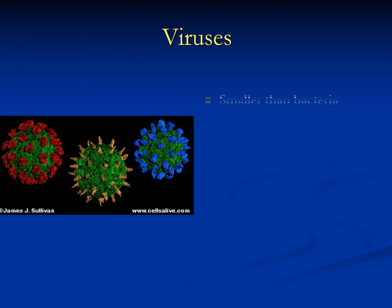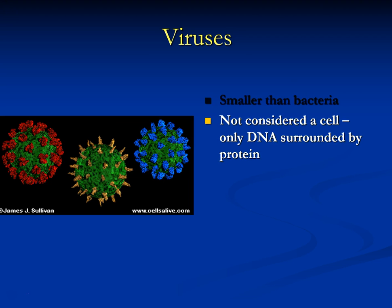Viruses are different in that they're smaller than bacteria. Technically, we don't really call them alive — they need to live in another cell in order to survive. They're basically DNA and protein. They don't have the cell parts you're learning about in the chapter, so they can't reproduce on their own. Here are three different viruses, each with little proteins sticking out.